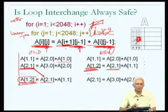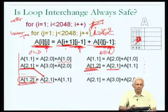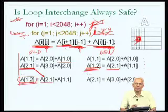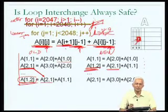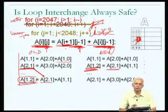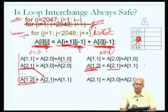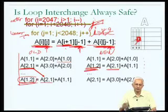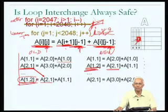One would have to do this loop interchange more carefully — not just move the loop headers and expect the same behavior. One may have to do something more fancy. For example, in this particular case one could correct the problem by having the I loop run from 2047 down to the lower value rather than upward. This illustrates that loop interchange is not safe unless done carefully, but it will be beneficial from the perspective of improving spatial locality of reference.